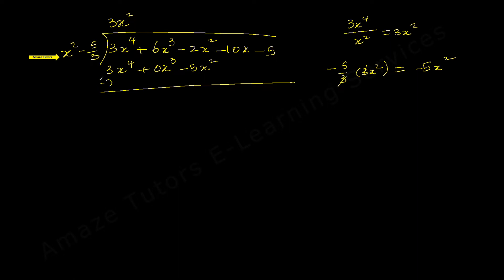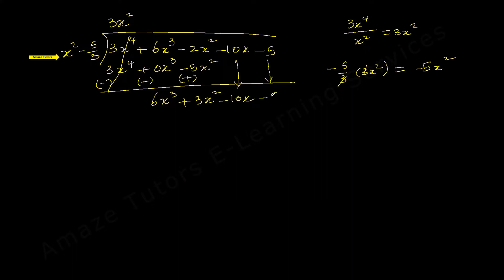Step 3 is subtraction — change the sign of the bottom terms. 3x⁴ minus 3x⁴ cancels. 6x³ minus 0x³ remains 6x³. Then -2x² + 5x² gives +3x². Now bring down the remaining two terms: -10x - 5.